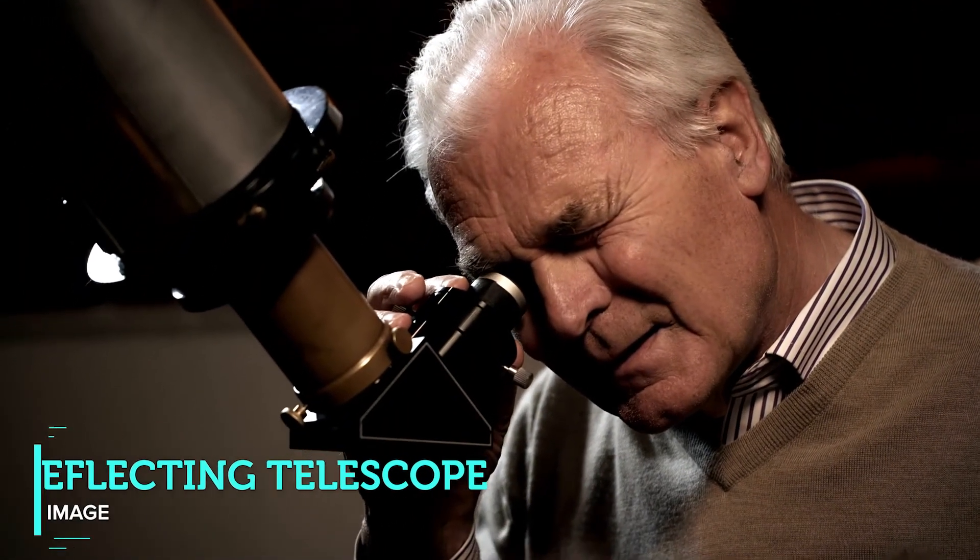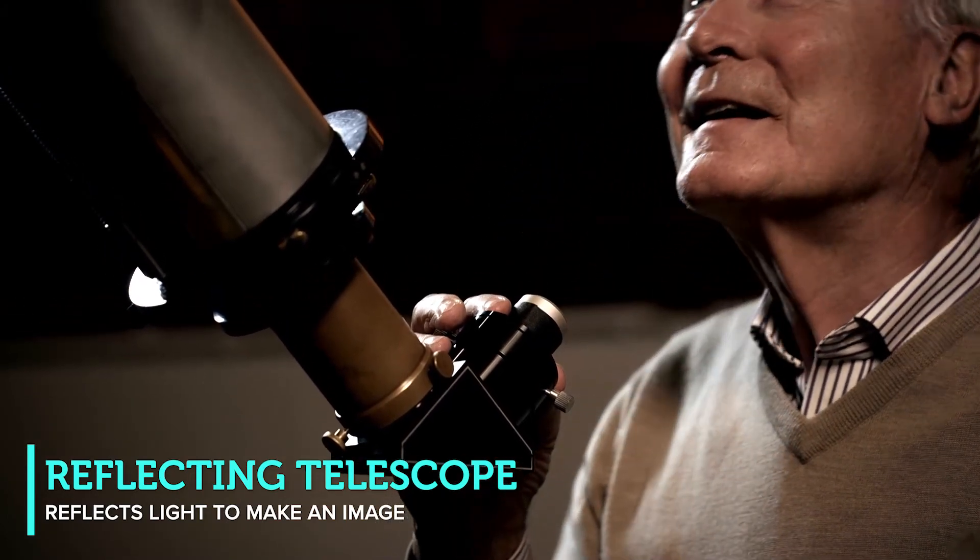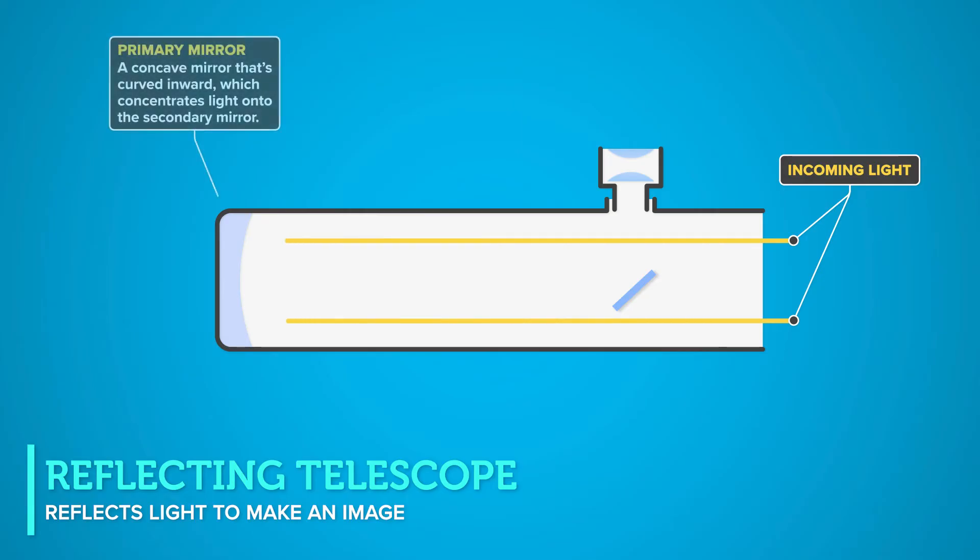A reflecting telescope reflects light to make an image. The yellow lines represent incoming light. Light is collected by a concave primary mirror. This mirror is curved inward, like the inside of a bowl.